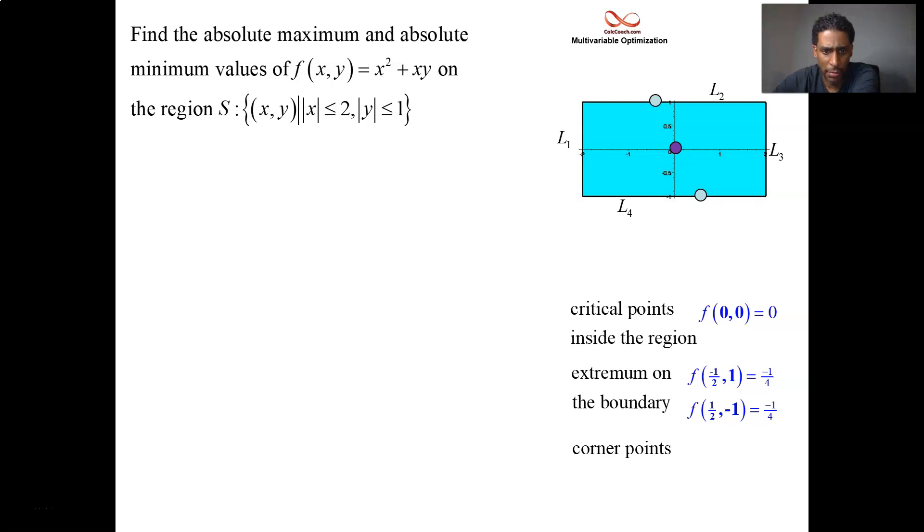Corner points. What are these corner points? I didn't label them before, but we could figure them out, right? We have these guys here, negative two and one, and negative two and negative one, two and one, two and negative one. So let's do negative two and one. Plug it into the function. Four minus two, you get a two. Two and negative one, four minus two, you get a two. Two and one would be four plus two, you get a six. And negative two and negative one, four plus two, you get a six.